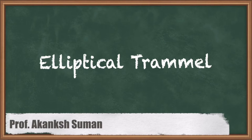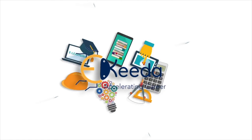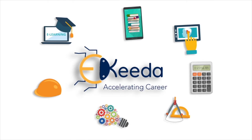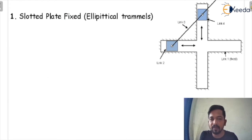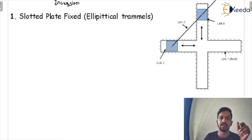Hello everyone, this is Akam Shuman. We are going to start a discussion on double slider crank mechanism inversions. Inversion means if there are four number of links in the mechanism, you can get different mechanisms by fixing different links. That is generally known as inversions.